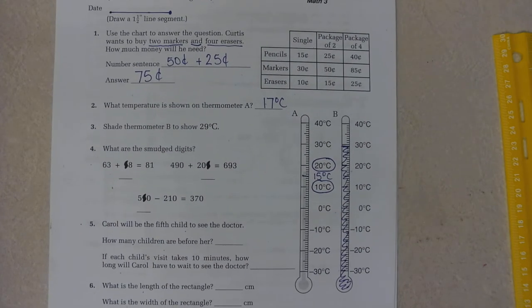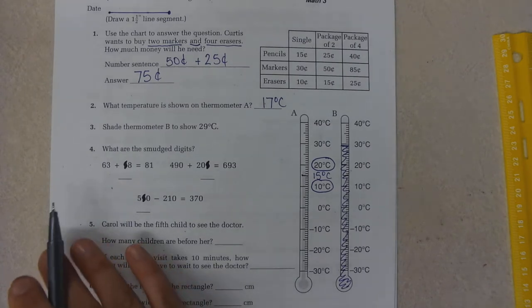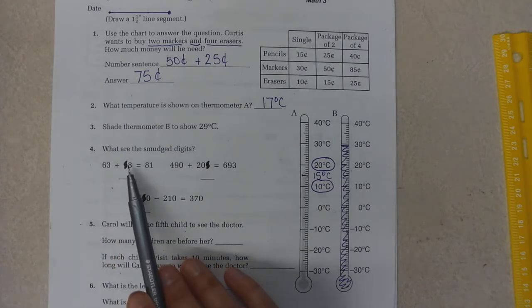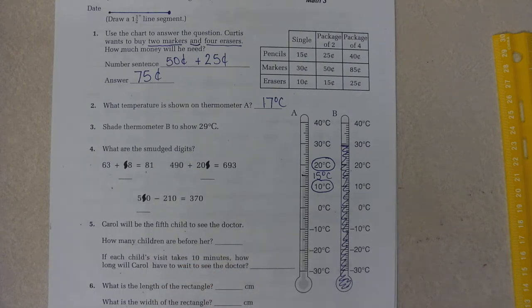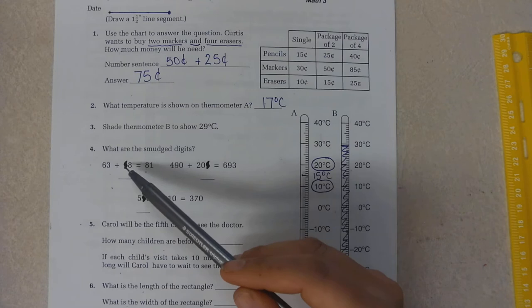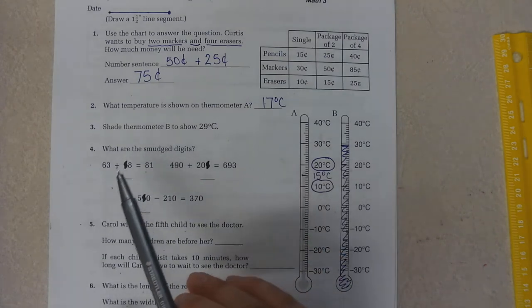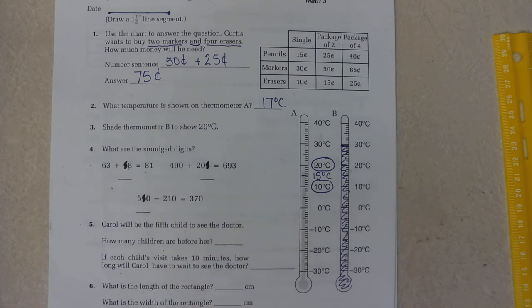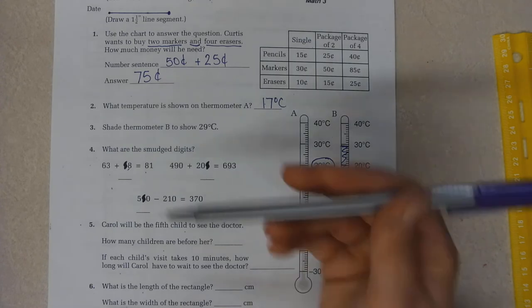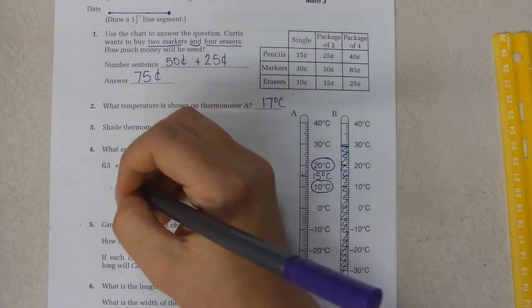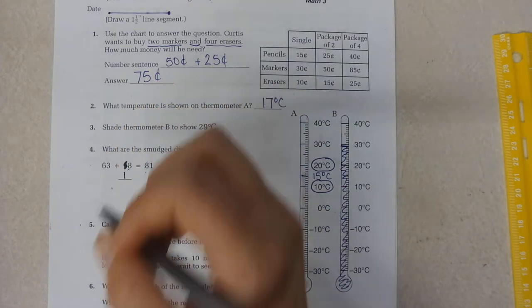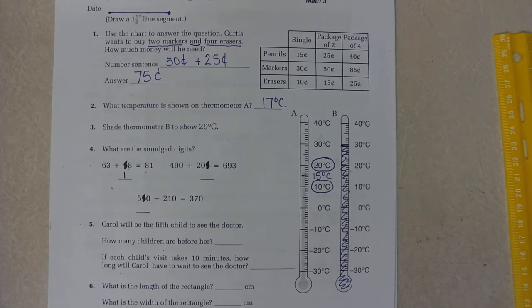What are the smudged digits? So as I look at this, 60 plus what equals 80? Well, I would originally say 20, right? 60 plus 20 equals 80. However, 3 plus 8 equals 11. So I already have a 10. So instead of a 2, it's going to be a 1, 10, because there's a 10 in that 11.